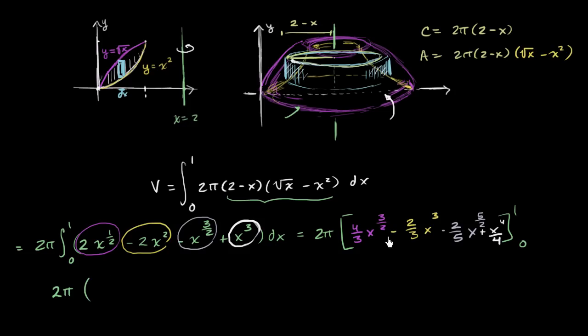So this is just 2π times when you evaluate all of this business at 1. So that's going to be 4/3 minus 2/3 minus 2/5 plus 1/4.